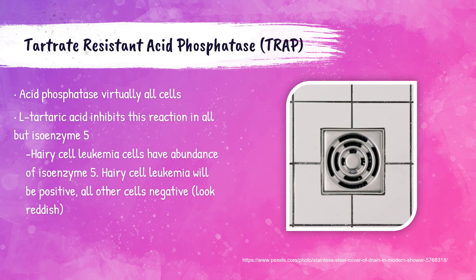The tartrate-resistant acid phosphatase (TRAP) stain is used for detection of hairy cells in hairy cell leukemia. The enzyme acid phosphatase is present in virtually all cells, but L-tartaric acid inhibits acid phosphatase staining in all cells except hairy cell leukemia cells — so hairy cells are the only ones that stain, appearing red. A helpful mnemonic: think of all the hair that gets trapped in the drain cover of your shower.